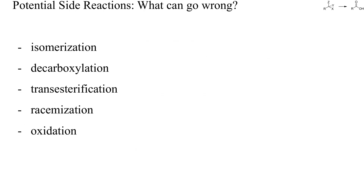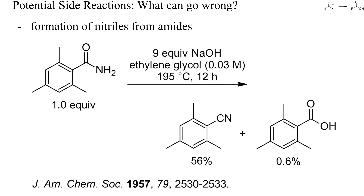So what can go wrong? Other typical side reactions include isomerization, decarboxylation of the product, transesterifications, or the racemization of enantiomerically pure intermediates. Most of these problems can be avoided by lowering the reaction temperature and the concentration of hydroxide or acids, by shortening the reaction time, or by enzymatic hydrolysis. During the base-induced hydrolysis of sterically demanding amides, occasionally nitriles are formed. Thus, a high reaction temperature caused a dehydration instead of an addition of water to the starting amide. As we saw in the hydrolysis of phenylacetonitrile, a high concentration of hydroxide does not always promote hydrolytic reactions.